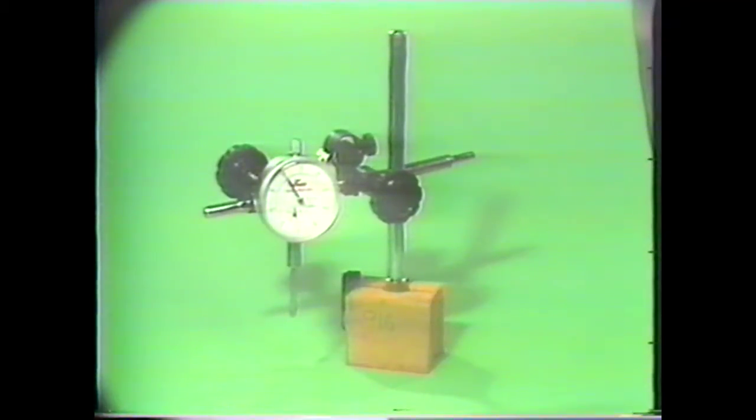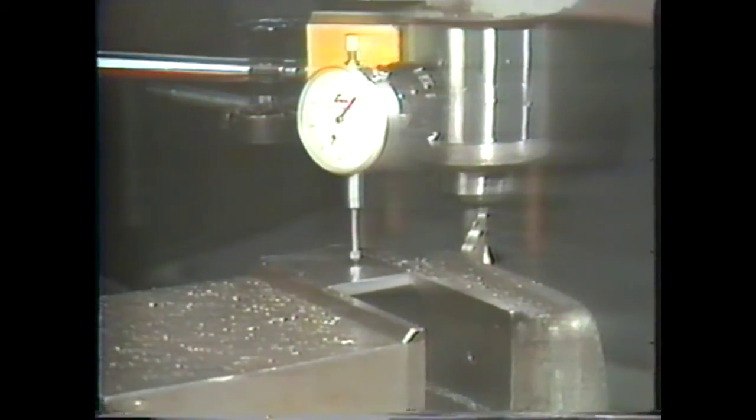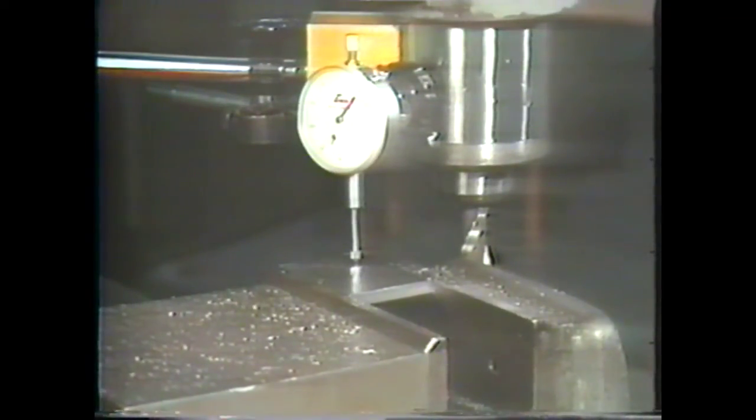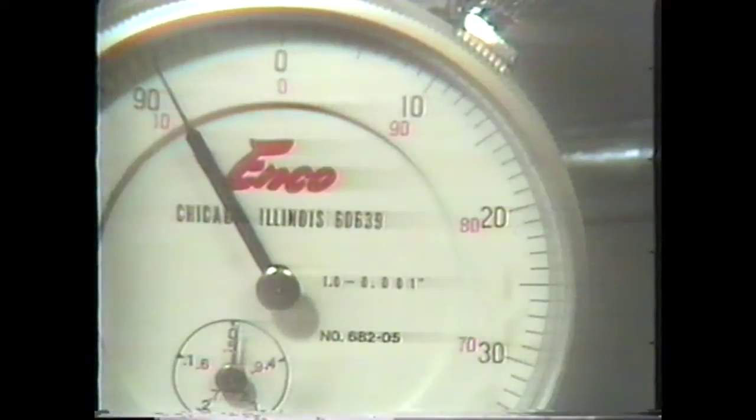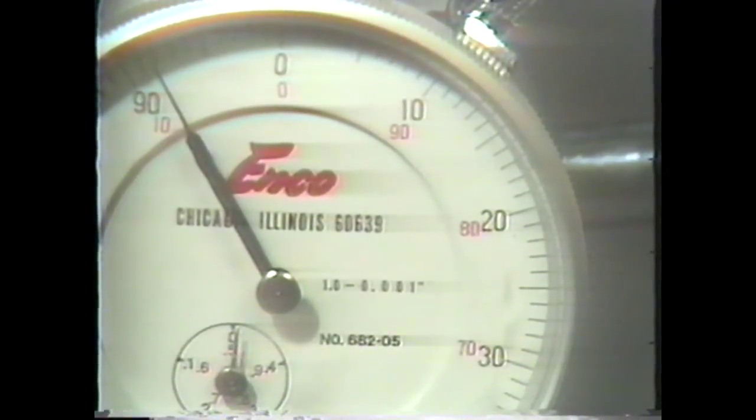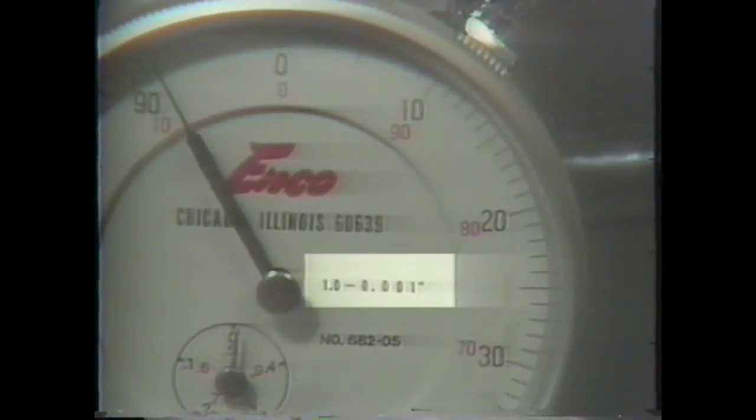Dial indicators have a wide variety of uses in the shop. They can be used for checking machine setups, checking alignments, and checking the size of parts. Dial indicators are manufactured with dials graduated to many different degrees of accuracy. However, most of them will measure to thousandths of an inch or ten thousandths of an inch.